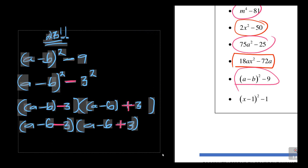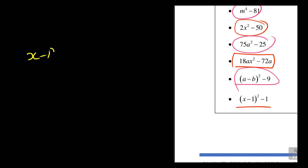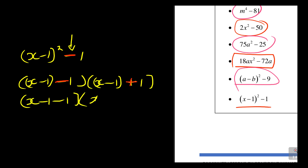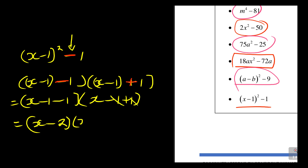For the quantity x minus 1 squared minus 1: the quantity x minus 1 is one square, and 1 is the other. Open two brackets: x minus 1 minus 1 in the first, and x minus 1 plus 1 in the second. Now simplify: x minus 1 minus 1 becomes x minus 2, and x minus 1 plus 1 — the ones cancel — giving just x. So the final answer is x times the quantity x minus 2, written as x minus 2 times x.